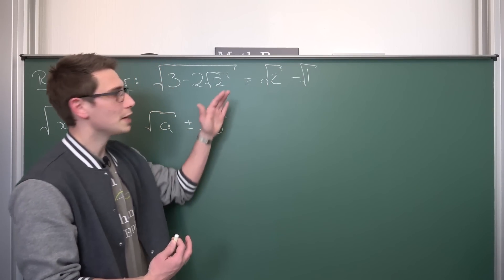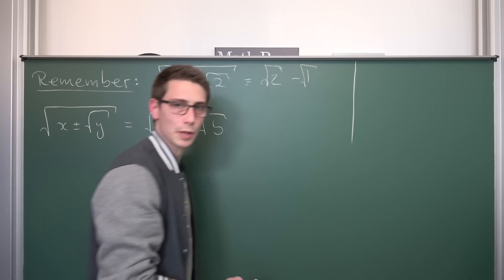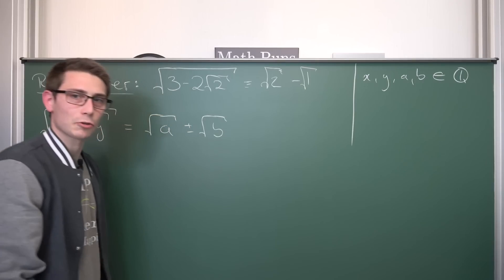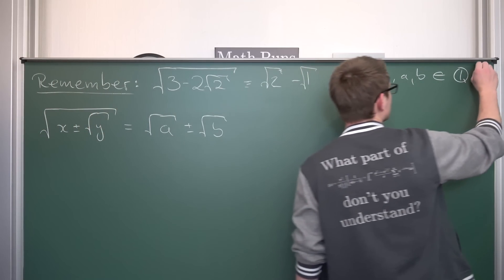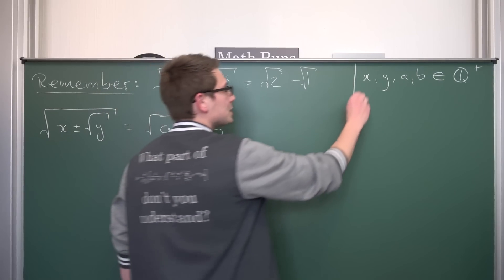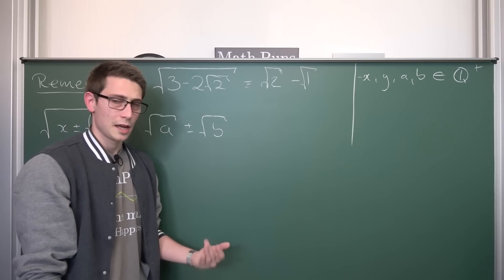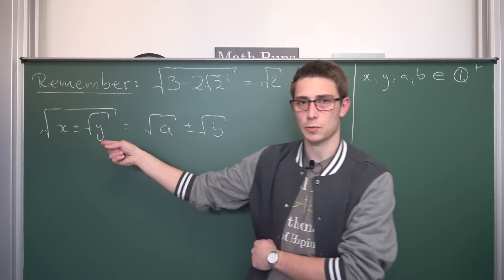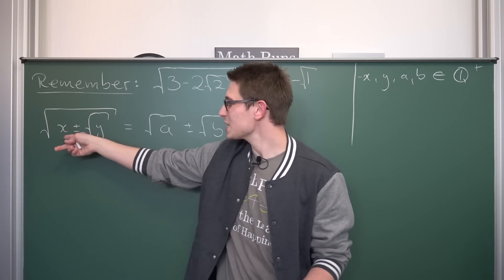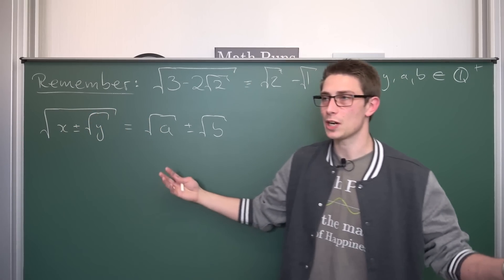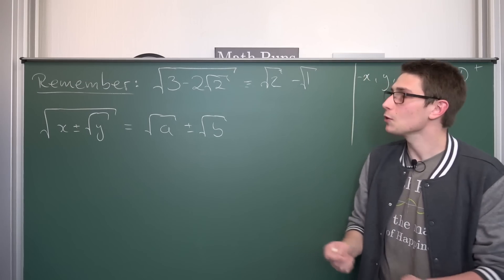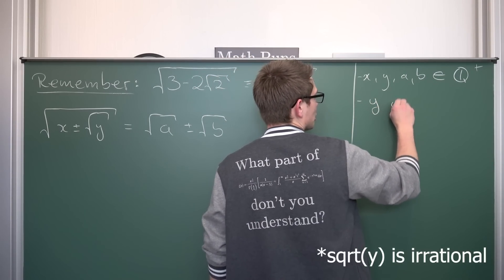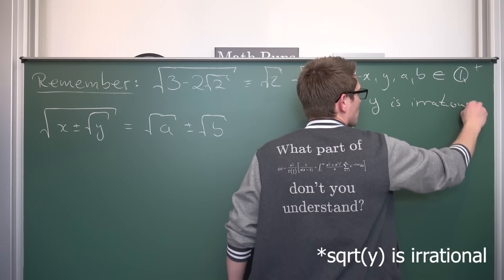We need to see which class of radicals inside of radicals we can actually denest. The first assumption is that x, a, and b are all elements of the positive rational numbers — we need them to be positive. Now, if y were a perfect square, that would be awkward because we'd get a rational result already denested. So to have a bit of fun as mathematicians, we are going to assume that y is not a perfect square — in other words, that the square root of y is irrational.